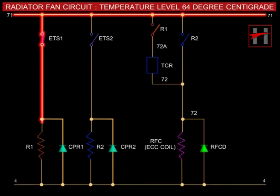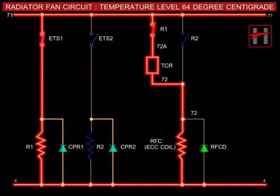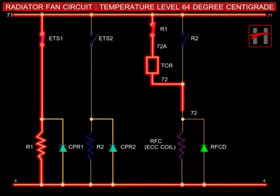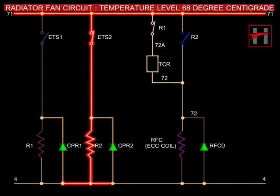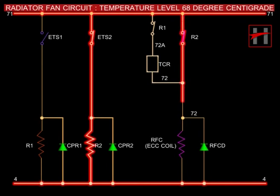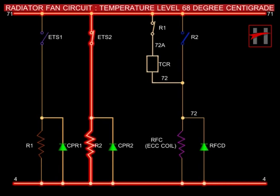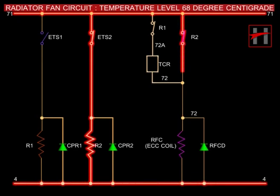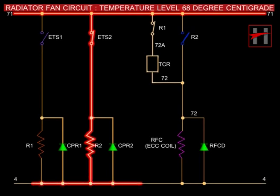The voltage of the circuit drops and the radiator fan runs at very low speed. When the temperature reaches 68.8 degrees centigrade, ETS-2 closes and the R2 coil is energized; the interlock of R2 closes. The current takes a direct path through cable number 72, ECC coil, and completes its path with cable number 4, resulting in the running of the radiator fan at high speed due to full voltage given to the ECC coil.